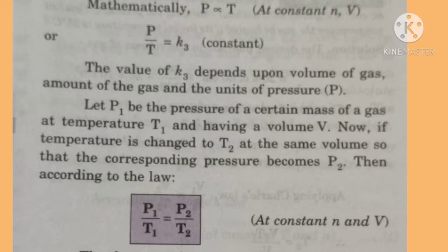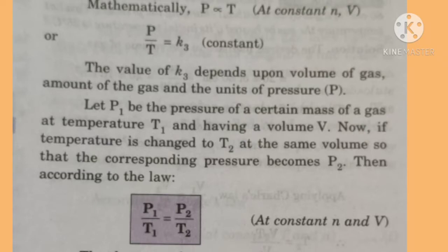The value of K3 depends upon the volume of gas, the amount of gas, and the units of pressure. Let P1 be the pressure of a certain mass of gas at temperature T1 having a volume V. If temperature is changed to T2 at the same volume so that the corresponding pressure becomes P2, then according to the law, P1 upon T1 is equal to P2 upon T2.